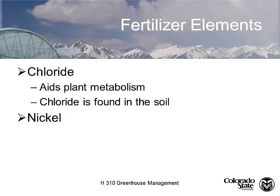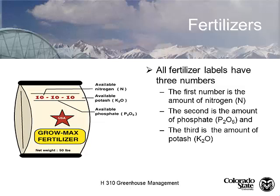Chloride is not chlorine — chloride is the anion form, while chlorine gas (Cl₂) is toxic. We get chloride from fertilizer salts. Chloride and nickel are two elements where you essentially have to create the deficiency in the laboratory to demonstrate it.